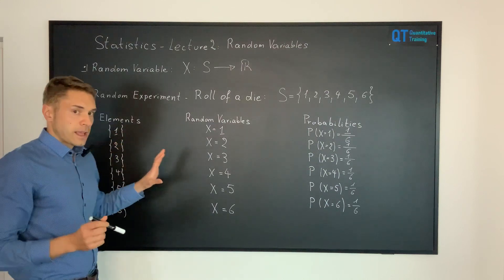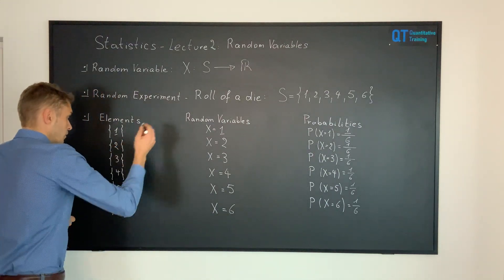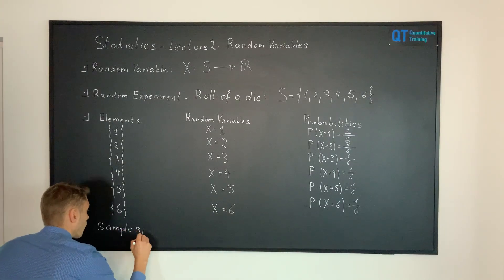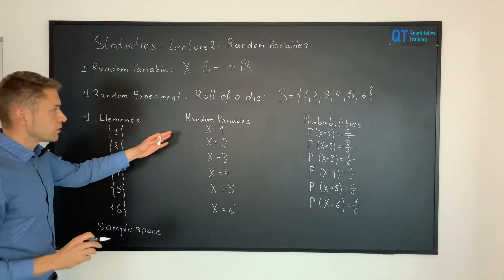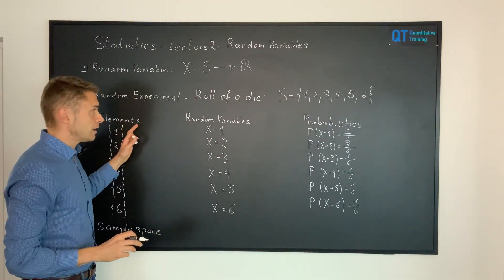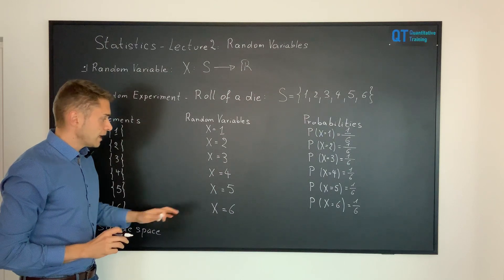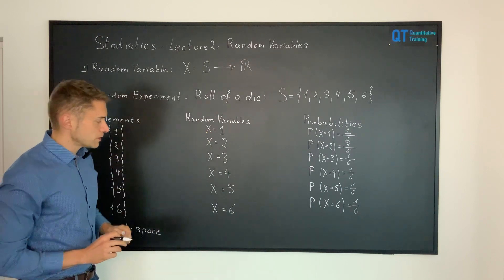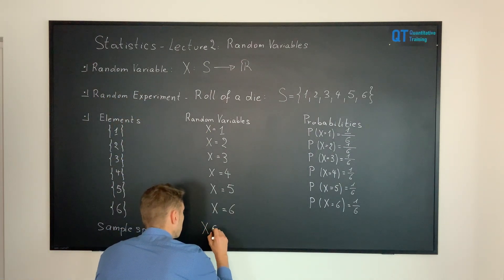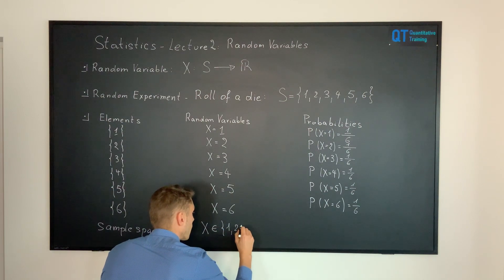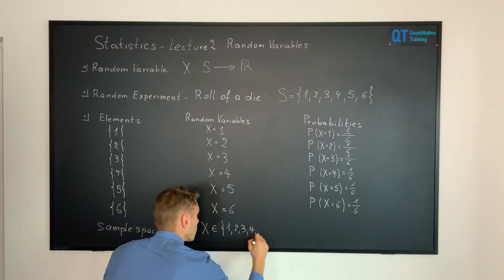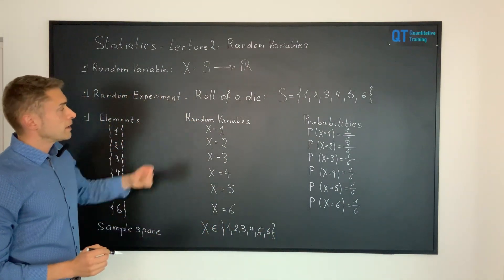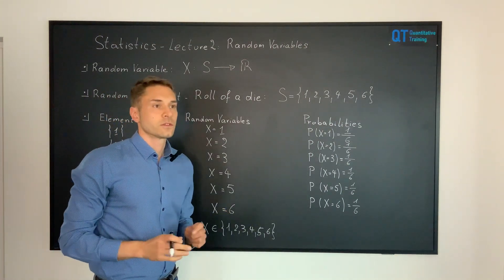At the level of the elements we recover the sample space of the roll of the die, and we have the associated random variables to the elements of the sample space. So X belongs to the subset going from one to six, and of course this subset is included within the total set of real numbers.